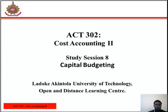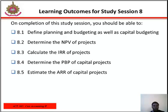Good day students. I'm here to take you through ACT 302 Cost Accounting 2, Study Section 8: Capital Budgeting. For this study section, students should be able to define planning and budgeting as well as capital budgeting, determine the NPV of projects, calculate the internal rate of return of a project, and determine the payback period of a capital project.